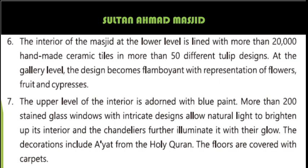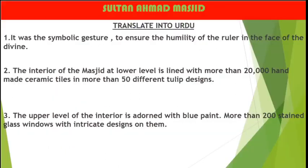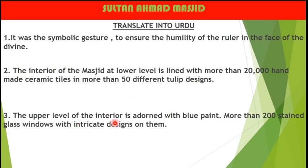Try to underline the difficult words, consult the dictionary, and then read it again. Then it will be very easy for you. Look at this activity — translate into Urdu: 'It was a symbolic gesture to ensure the humility of the ruler in the face of divine power.' The interior of the masjid at the lower level is lined with more than 220,000 handmade ceramic tiles in more than 50 different tulip designs. The upper level of the interior is adorned with blue paint. More than 200 stained glass windows with intricate design. Clear?